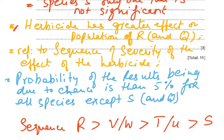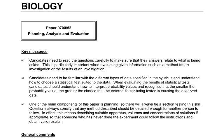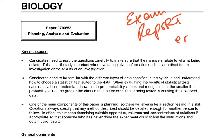Looking at the sequence of severity: species R shows significance at 0.001 probability — meaning 99.9% certainty that herbicide is causing the decrease. Then V and W, then T and U follow in order of severity. Candidates need to go through the exam report, available online, by searching for the year and 'ER' — examiner's report — and read the key messages carefully.